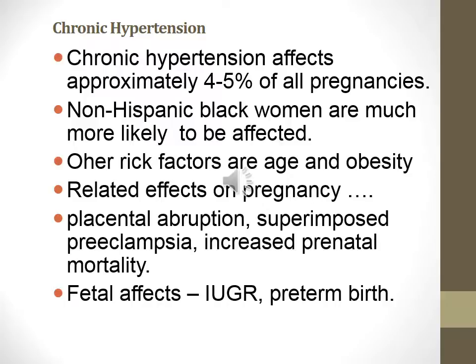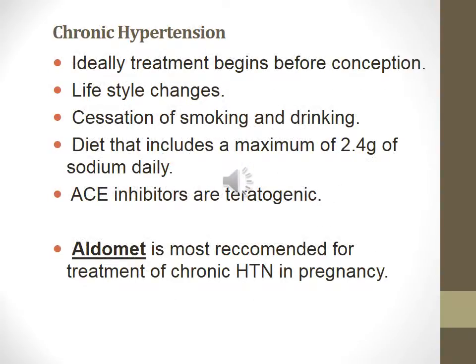Chronic hypertension affects approximately 4-5% of all pregnancies. Non-Hispanic Black women are much more likely to be affected. Other risk factors include age and obesity. Related effects on pregnancy include placental abruption, superimposed preeclampsia, and increased perinatal mortality. Fetal effects include IUGR and preterm birth. Ideally, treatment begins before conception. Lifestyle changes include stopping smoking, drinking, and following a diet with a maximum of 2.4 grams of sodium daily. ACE inhibitors are teratogenic to the fetus. Aldomet is most recommended for treatment of chronic hypertension during pregnancy. If you have chronic hypertension, seek treatment with your physician if you become pregnant.